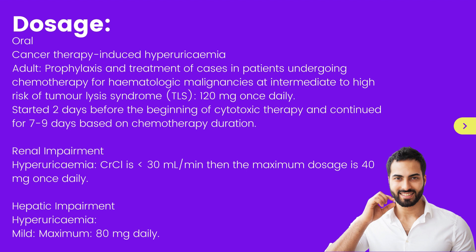Renal Impairment — Hyperuricemia: If creatinine clearance is less than 30 mL per minute, the maximum dosage is 40 mg once daily.